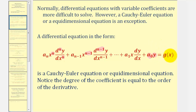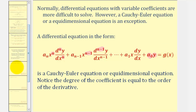If g of x is equal to zero, we have a homogeneous differential equation, and if g of x is non-zero, we have a non-homogeneous differential equation. So looking at our example,